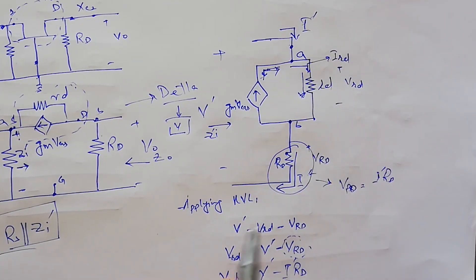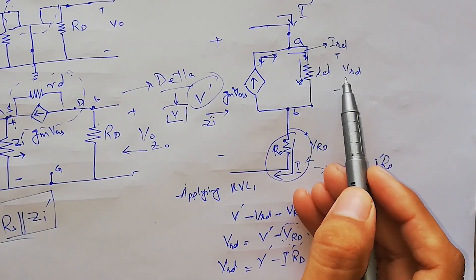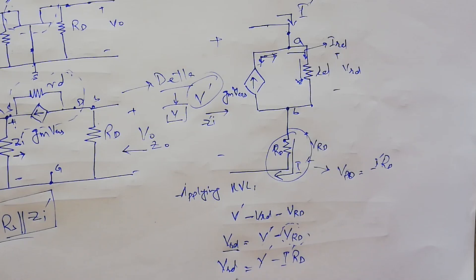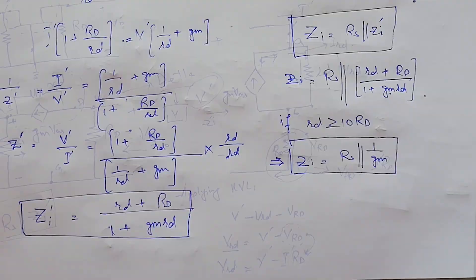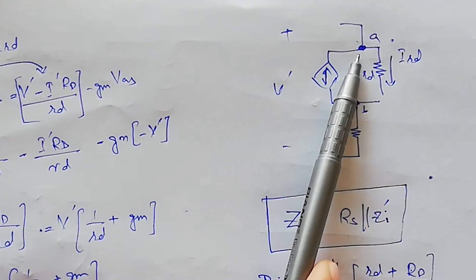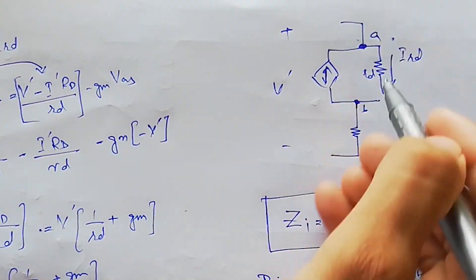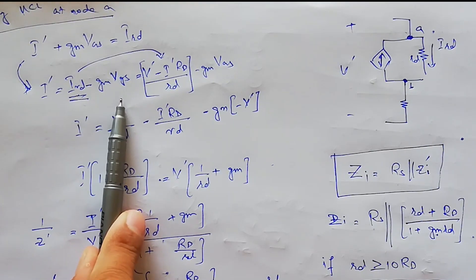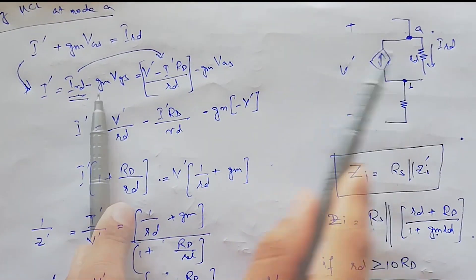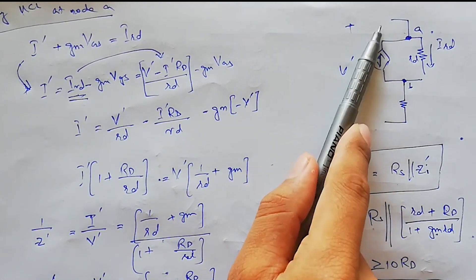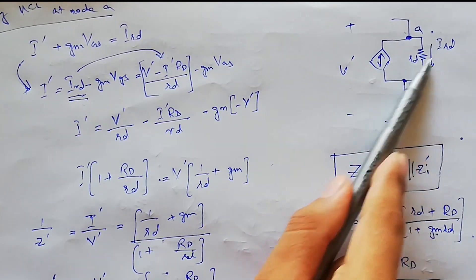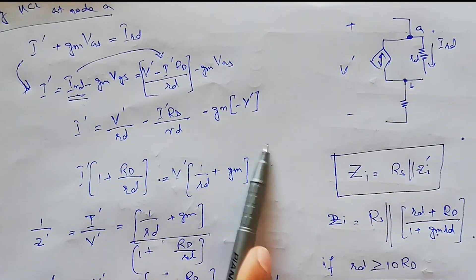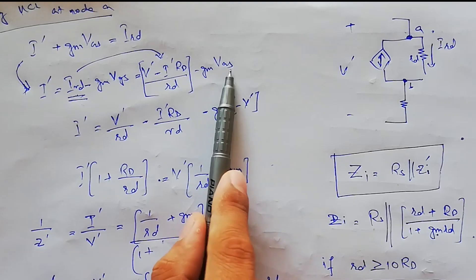This current is called IRD. Applying KVL at this node, V-dash equals minus VRD — the voltage drop here — and VRD. Arranging gives us VRD minus VRD, and this VRD is replaced with I-dash times RD. Applying KCL at node A, the current equation is: I-dash plus gm*VGS equals IRD. Rearranging, since IRD is the current flowing through the small-signal resistance rD, we can write the equation for that resistance as: V-dash minus IRD times rD divided by rD, minus gm*VGS. So we are going to replace VGS with minus V-dash, as it is the opposite voltage appearing at VGS.